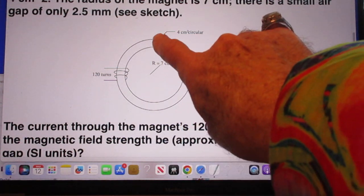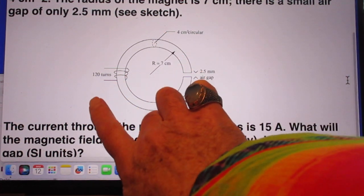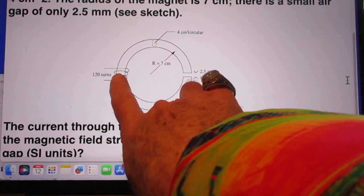You see the cross-sectional area, 4 square centimeters circular. And you see here 120 turns.